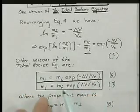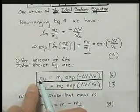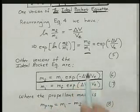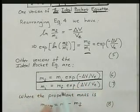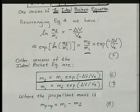Or if you want to write the opposite, we can divide exponential to the other side, and then 1 over e to the minus will be e upstairs to the plus. So we have m initial is m final times exponent to the plus delta V over VE.